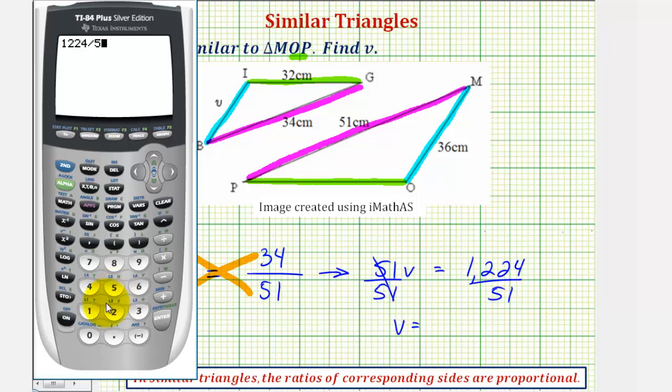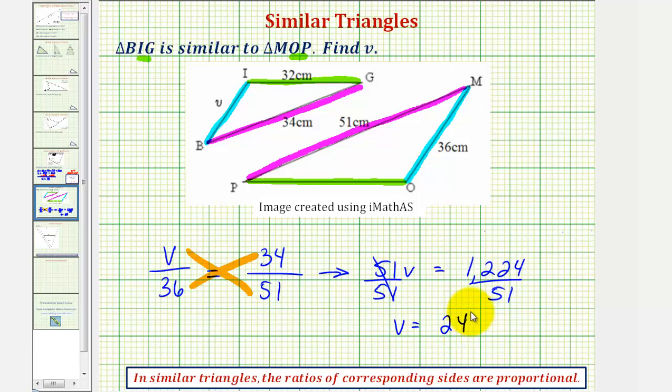1224 divided by 51 is equal to 24, and we can see the units would be centimeters. I hope you found this helpful.